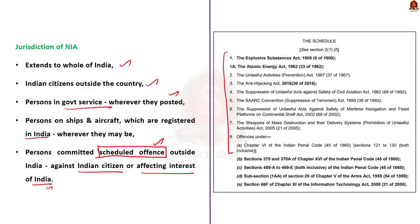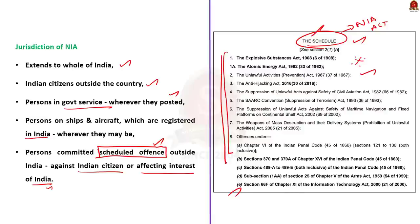The jurisdiction of NIA extends to the whole of India and even applies to Indian citizens residing outside the country. It also extends to people in service of the government wherever they are posted, persons on ships and aircraft registered in India wherever they are, and persons who committed a scheduled offense outside India against Indian citizens or affecting the interest of India. The scheduled offenses are those specified under the acts mentioned in the schedule to the NIA Act, covering a wide range of offenses like terror activities, human trafficking, counterfeit money, and arms trafficking. Please pause the video and go through the acts mentioned in the NIA schedule — there is a possible prelims question here.